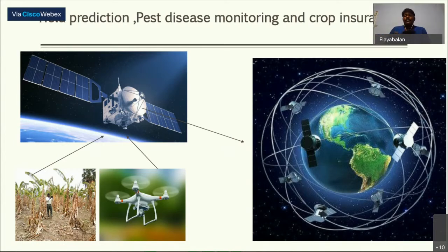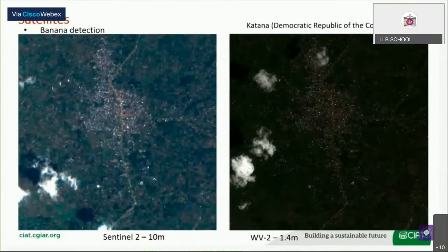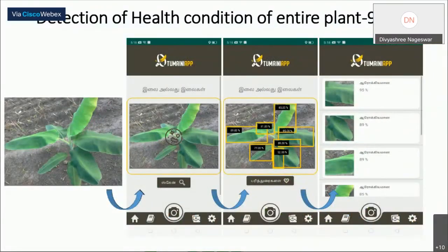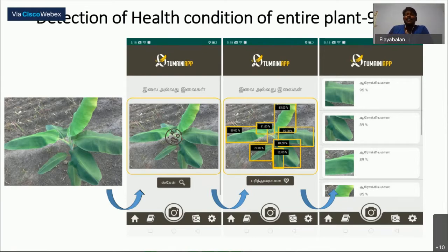Before the demo, some questions from students. Question: Does this app provide preventive measures for infections and recommendations for fertilizers? Answer: No, this is exclusively for pest and disease detection. We are now adding nutrition deficiency and nutrition recommendation as well.